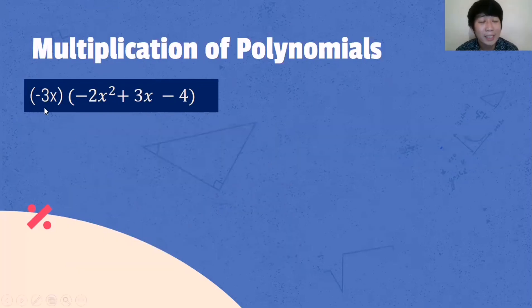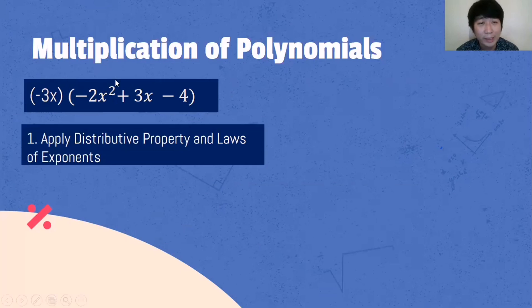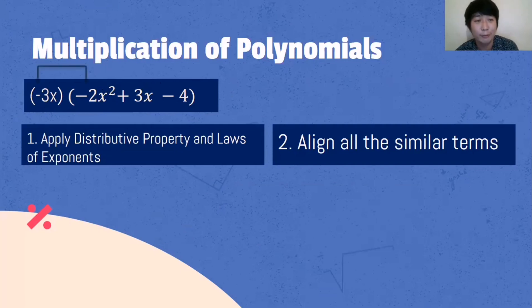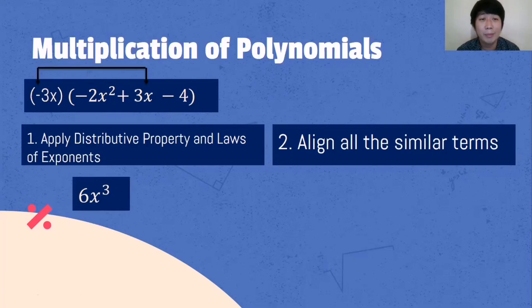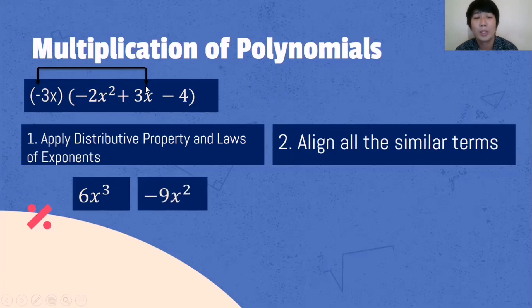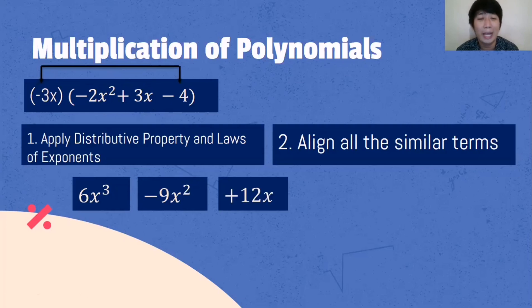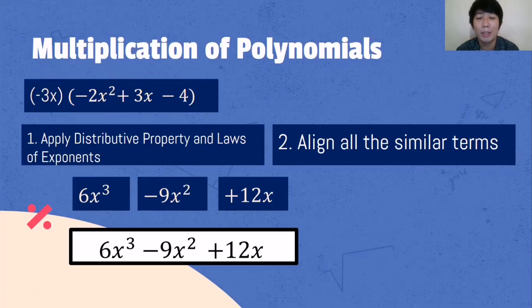Another example: negative 3x multiplied by the quantity of negative 2x squared plus 3x minus 4. We will be distributing negative 3x to negative 2x squared, 3x, and negative 4. Negative 3x multiplied by negative 2x squared: negative 3 times negative 2 is positive 6, then x raised to 1 plus 2 is x cubed, so the answer is 6x cubed. Next, negative 3x multiplied by 3x: negative 3 times 3 is negative 9, then 1 plus 1 is 2, giving negative 9x squared. The last one, negative 3x multiplied by negative 4, the answer is positive 12x. So the answer is 6x cubed minus 9x squared plus 12x.